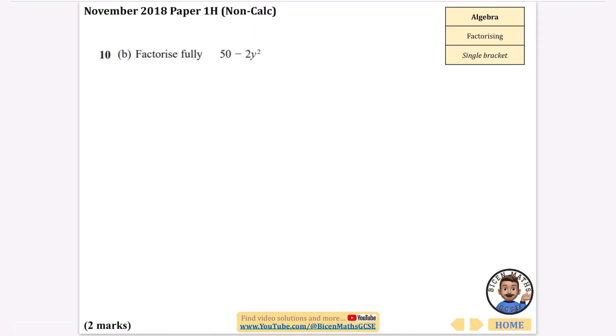This one is a single bracket, very easy. We want to factorize this thing fully. I'm going to start off by taking out the highest common factor. So I've got 50 minus 2y squared, and that's going to be taking out a factor of 2, so I then get 25 minus y squared.